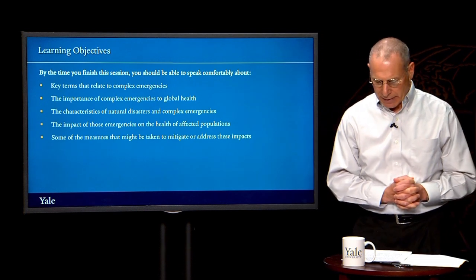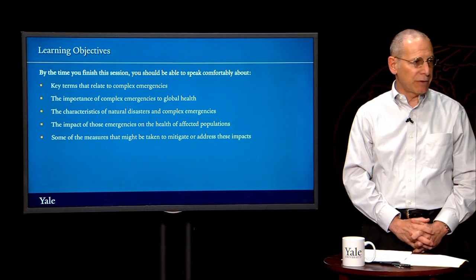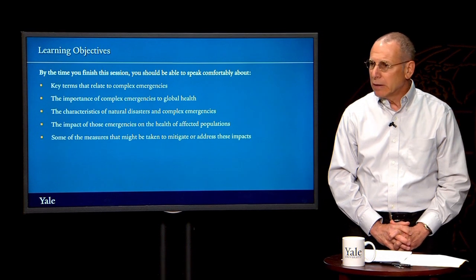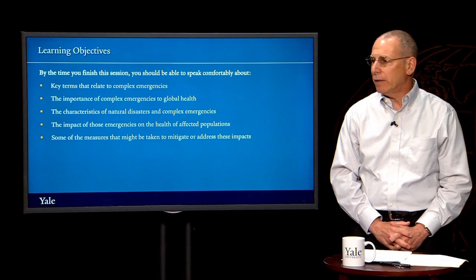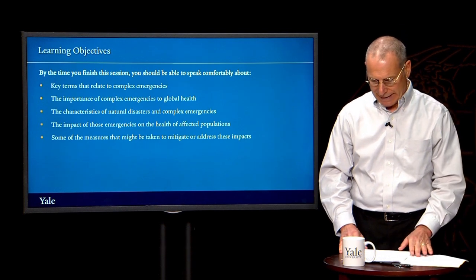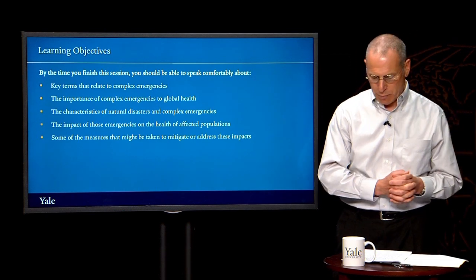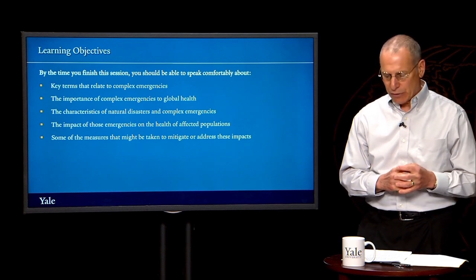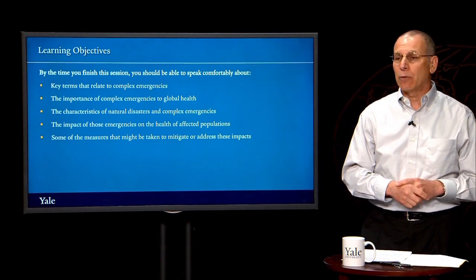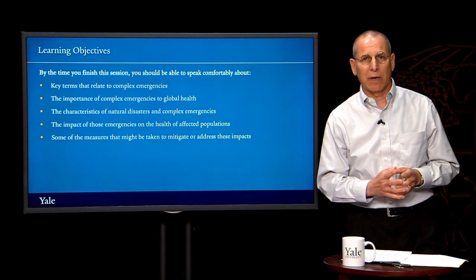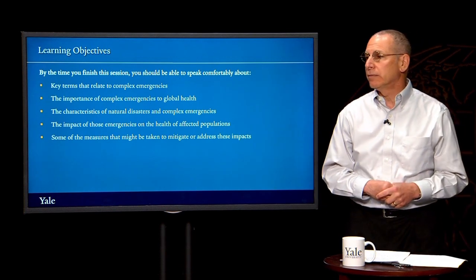Let's begin with a few vignettes to help us get a better picture of the links between natural disasters and complex emergencies in health. Javad lived in the Pakistani province of Kashmir when the earthquake hit. All the buildings in his village were destroyed. Hundreds of people in the village were killed, mostly as a result of being buried in the rubble. Many other people were badly injured, with injuries overwhelmingly orthopedic in nature. The earthquake also destroyed wells, a health center, and roads leading to and from the village. Javad feared that many of those who were injured would soon die.